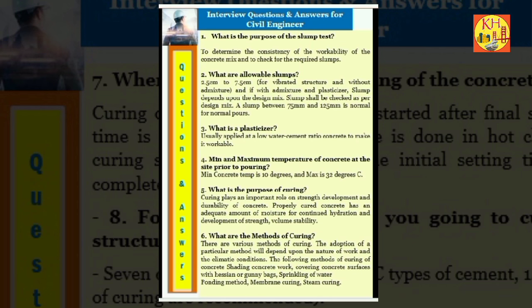Interview questions and answers for civil engineer. Question 1: What is the purpose of the slump test? To determine the consistency and workability of the concrete mix and to check for the required slumps. Question 2: What are allowable slumps? 2.5 cm to 7.5 cm for vibrated structure without admixture. With admixture and plasticizer, slump depends upon the design mix. Slump shall be checked as per design mix. A slump between 75 mm and 125 mm is normal for normal pours.